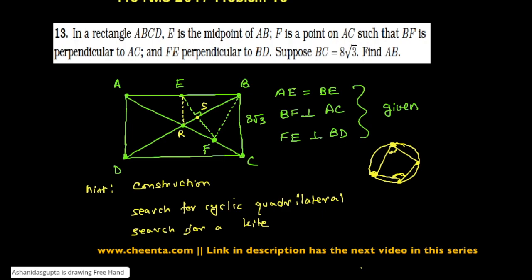So a kite is a figure like this which has these two sides equal, and these two sides equal. So these are the three hints. Try the problem and come back - the link in the description will take you to the next discussion video. But try it yourself first. All the best.